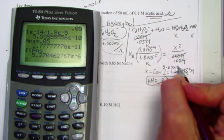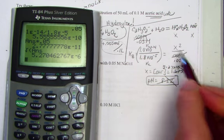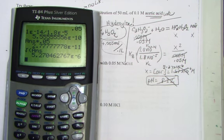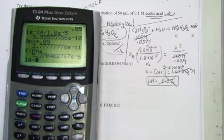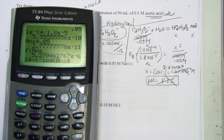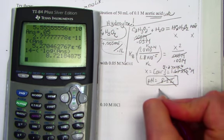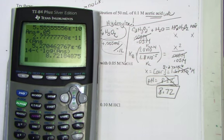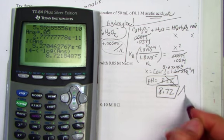5.27 times 10 to the negative 6th, adjusting for my decimal error. So 14 minus, parenthesis negative log of that answer, finds a pH of 8.72 pH units. And that is the correct answer.